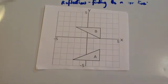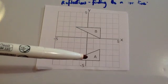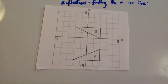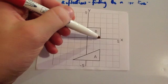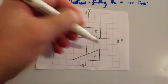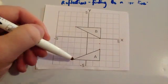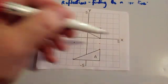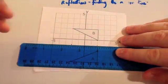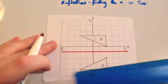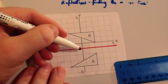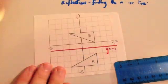Here's a typical question — it gives you an object and an image, saying shape A has been reflected to shape B, and asks you to locate the mirror line. To find it, I choose two corresponding vertices. The mirror line goes through the midpoint between them. In this case the mirror line is a horizontal line, and because it goes through the y-axis at minus 1, the equation is y equals minus 1.